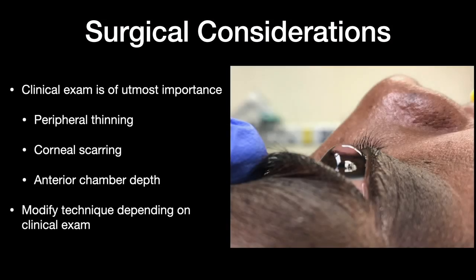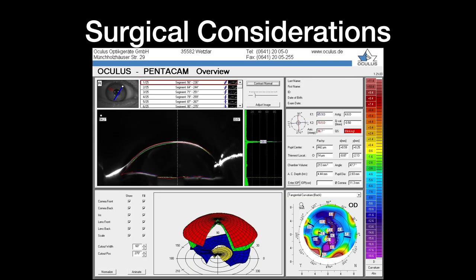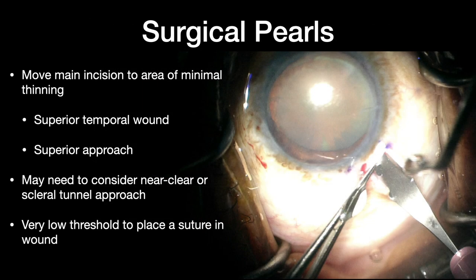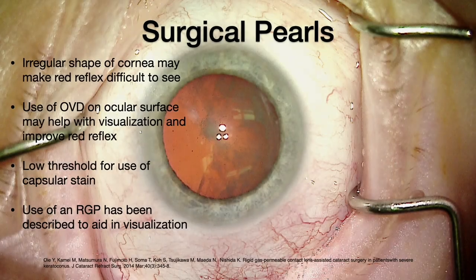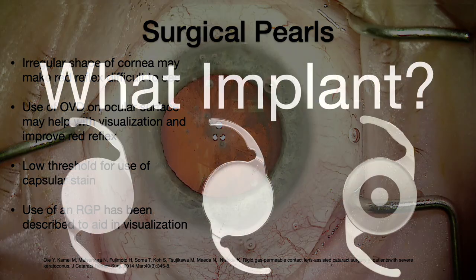In the OR, what do you have to watch out for? You've got very thin corneas — they might not seal up as well — apical scarring, and very deep anterior chambers. Just look at this Pentacam: look at how thin that peripheral cornea is. If you make an incision through that thin area, it may never close. So you'll have to consider doing a superior approach, maybe a supratemporal, or even go back to a near-clear or scleral tunnel. Visualization of the red reflex can be challenging because of the irregular cornea, and using viscoelastic on the cornea can help, certainly using stains, and some people have even put gas-permeable lenses on.